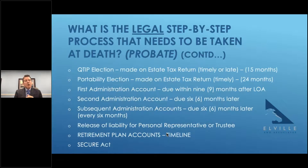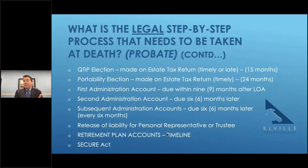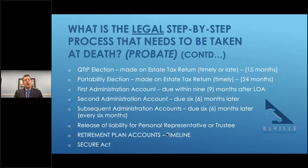Regarding the SECURE Act: signed by President Trump in January of 2020, with new regulations coming out about six weeks ago. The SECURE Act says if you're healthy, well, and a non-spouse beneficiary, you only have 10 years to take assets out of an IRA and have them taxed. If you are in one of the five exempt categories — surviving spouses, minor children, persons less than 10 years younger than the plan participant, someone chronically ill, or someone with special needs or disability — those five categories of individuals can stretch out an IRA over their long life expectancy, just as we all used to be able to.